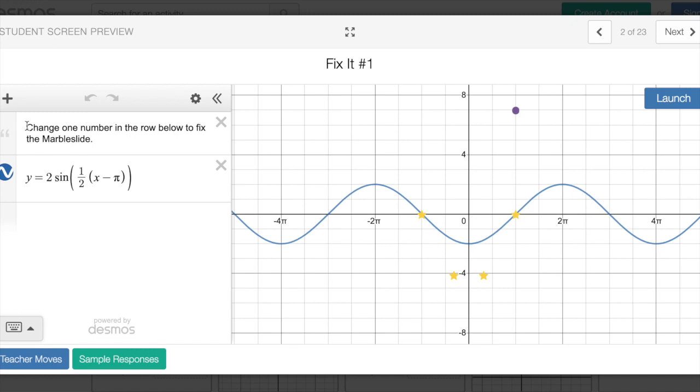It says change one number in the row below to fix the marble slide. Now I definitely want to preface this by saying make sure that you read the little blurbs that are off to the side here, the little quotes like the instructions, because sometimes it can get to a point where you feel like you're in the groove and you can just jump straight to this and start playing around with numbers. If it tells you to just change one number, I'm not going to mark it wrong or anything if you do more than one, but you're making it a little harder on yourself than it needs to be. That tells you that it's possible to do this by just changing one of these numbers.